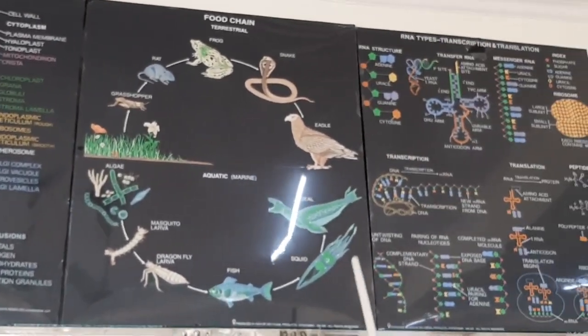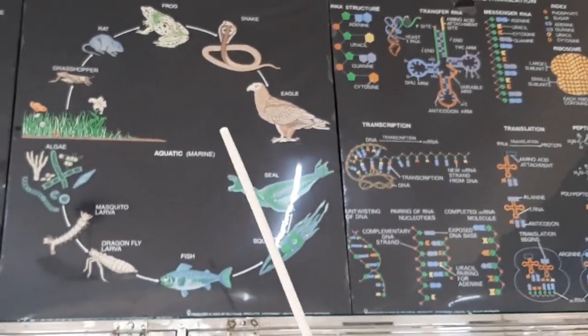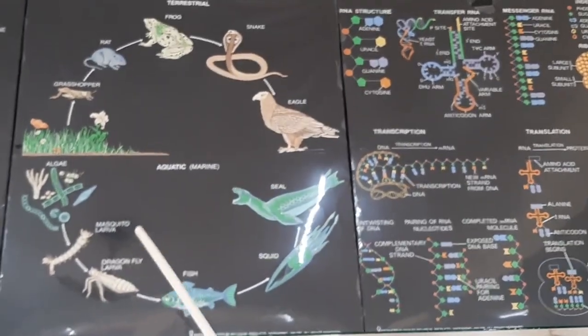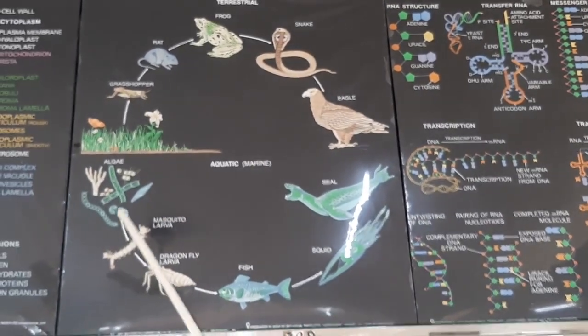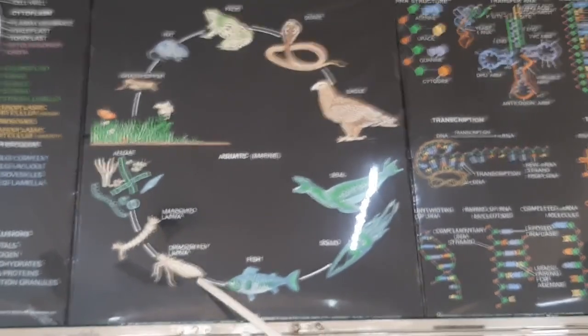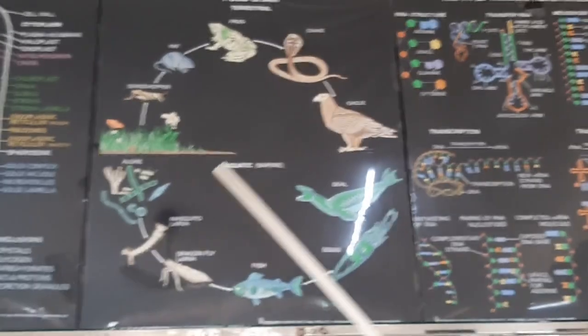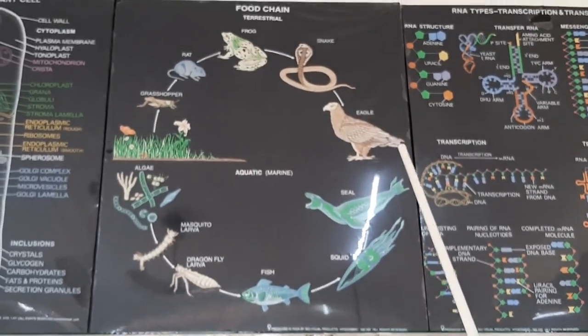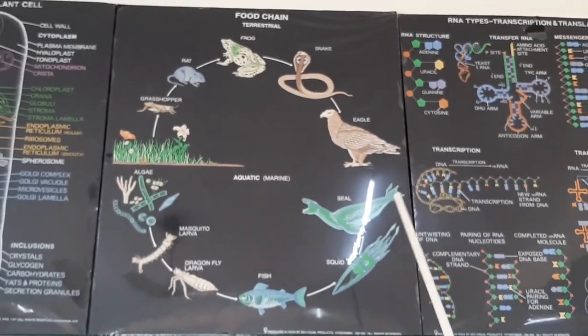Here the food chain is shown. Food chain means who eats whom. In the lower portion they are showing the aquatic food chain, while in the upper portion they are showing the terrestrial food chain.